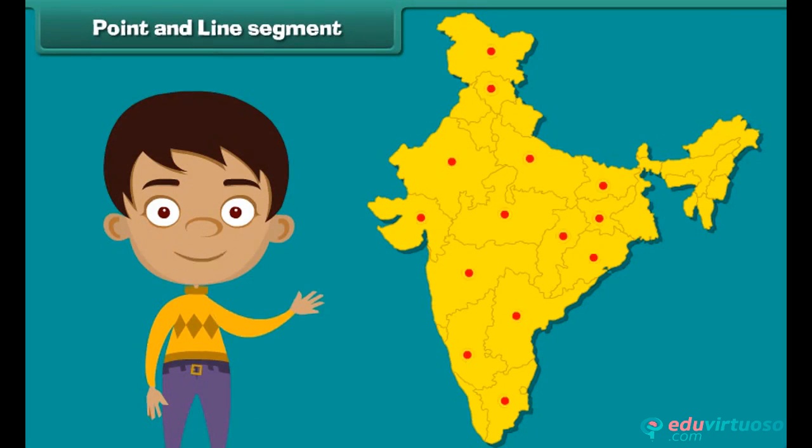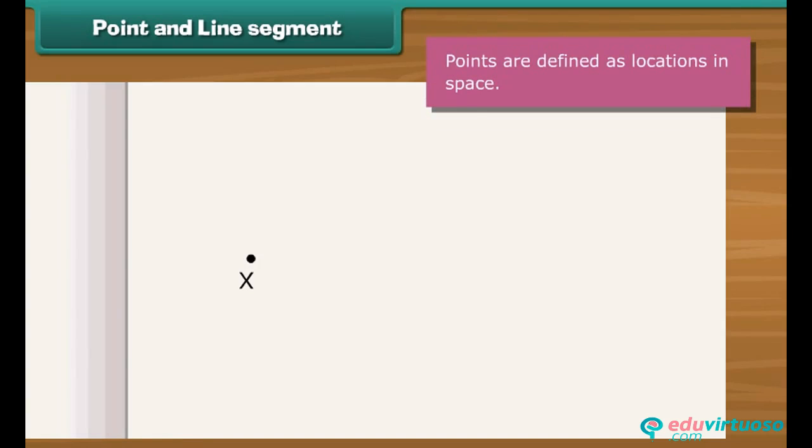Look at this Indian map. We see that the cities are represented by dots. These are called points. In geometry, points are defined as locations in space. They tell about the position of objects.